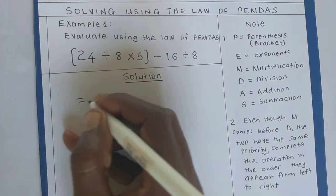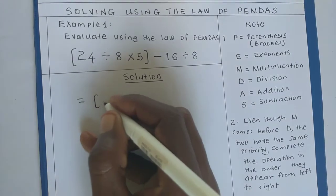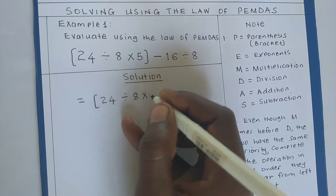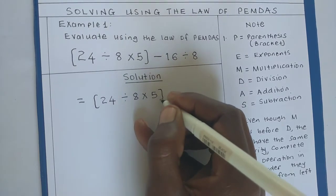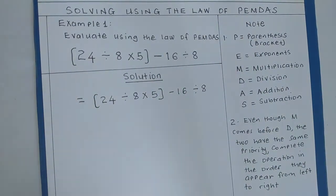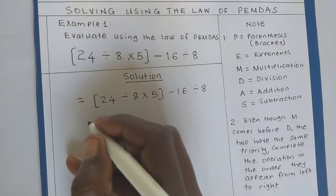We have 24 ÷ 8 × 5 - 16 ÷ 8. Now let's look at the parenthesis. We start with solving what is inside the bracket. Parenthesis: this is our bracket. Let's first handle the bracket.